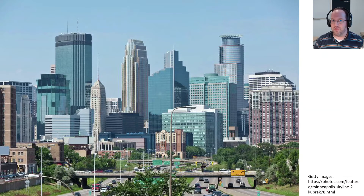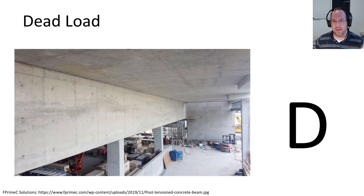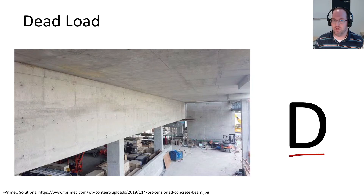So what are the forces of nature that we're up against here? First, we have to contend with gravity, and there are several components to gravity. First of all, we have the building weight itself. We call this dead load, and we denote it as capital D. That can be a significant portion of our building, especially with concrete structures, although sometimes we have more lightweight steel or aluminum structures.